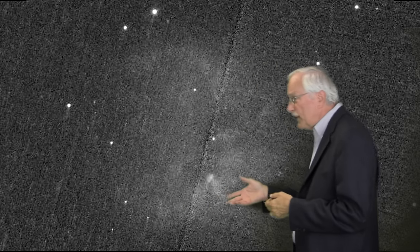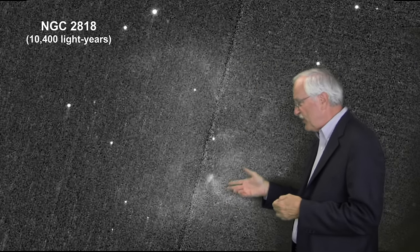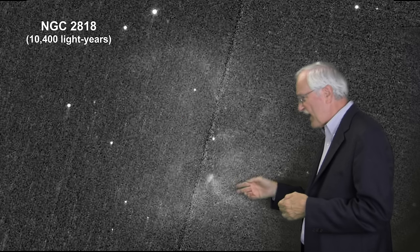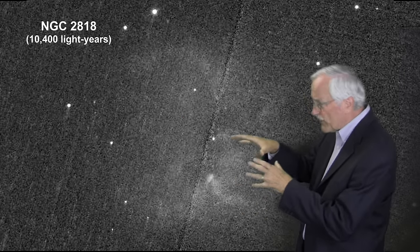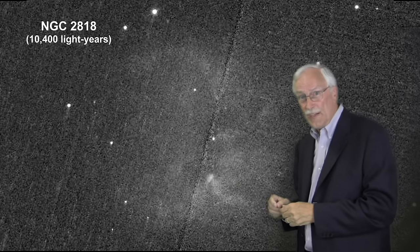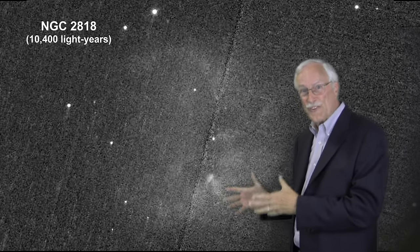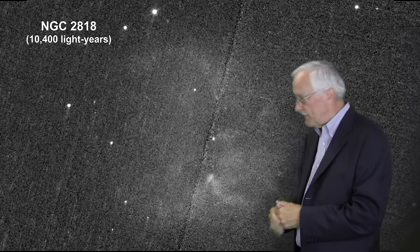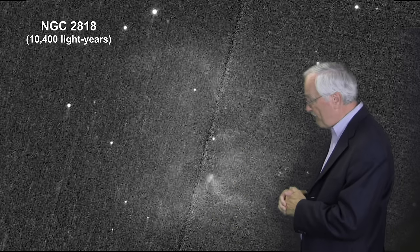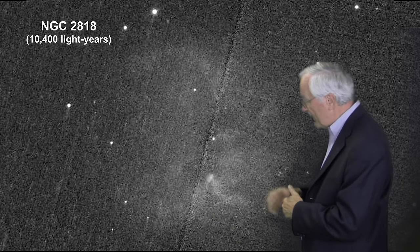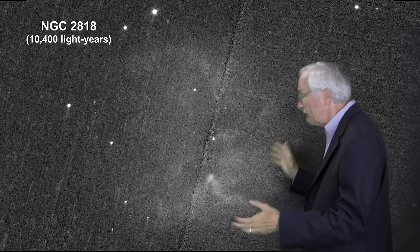Here we see Planetary Nebula NGC 2818. It's what someone would see if they were looking through the telescope. It's a wisp — very nebulous. That's how it gets its name Nebula, by the way. To the untrained eye, it might look like nothing at all.